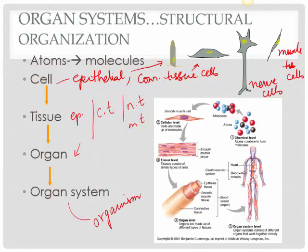So from small to big you can see: atoms, molecules, cells, tissues, organ, organ system, and then the final organism.